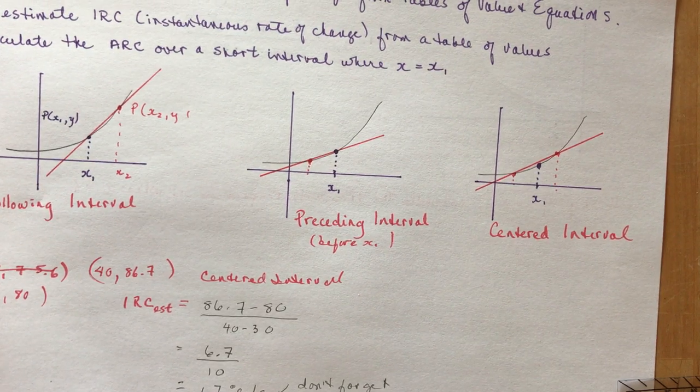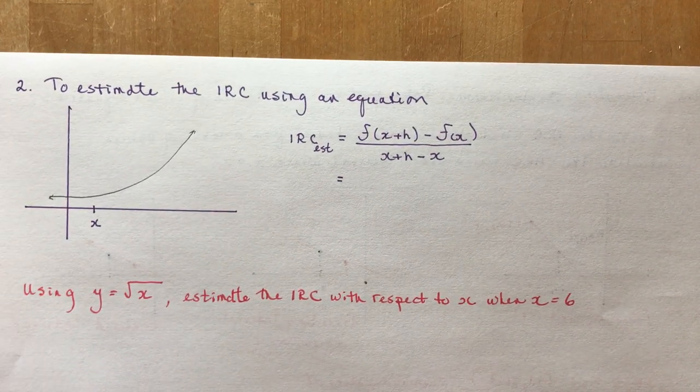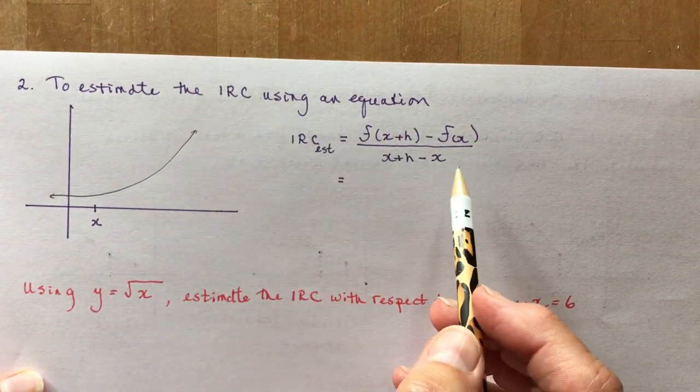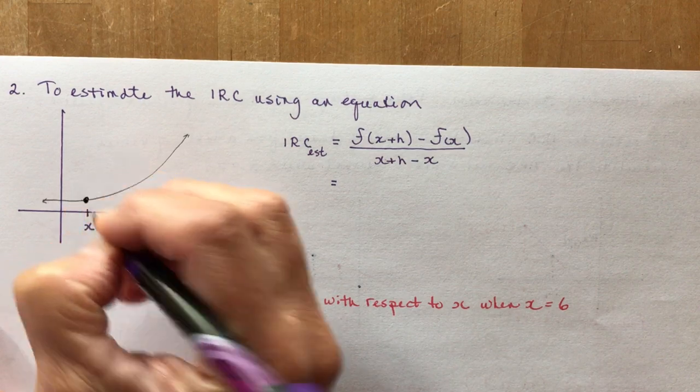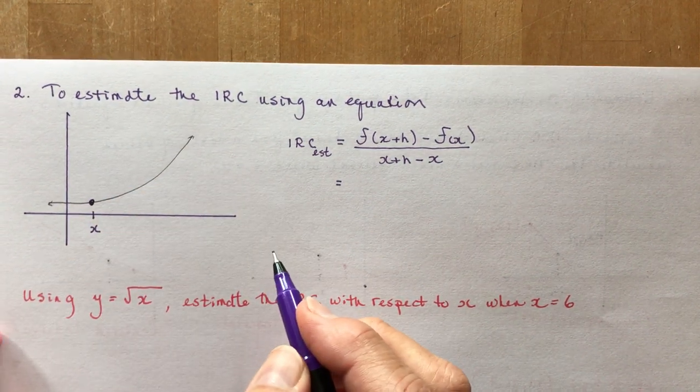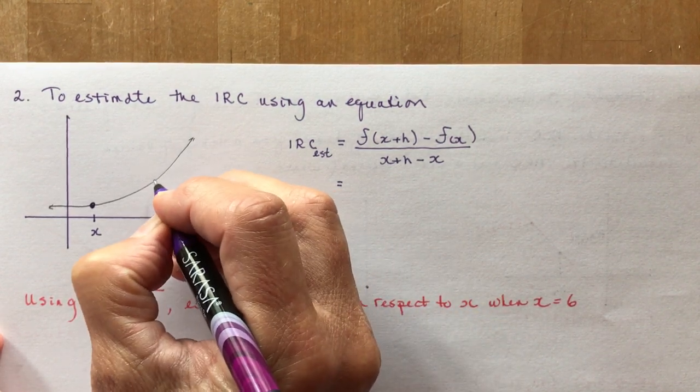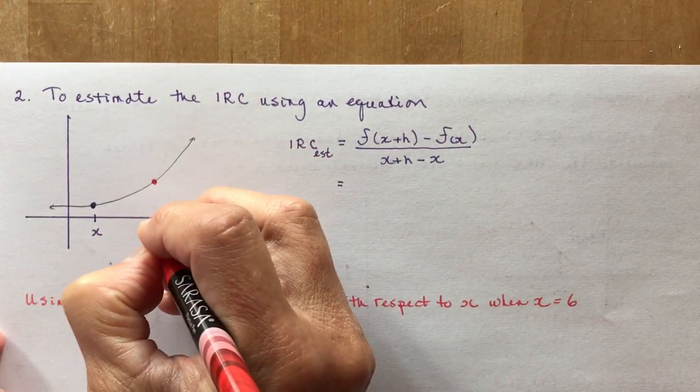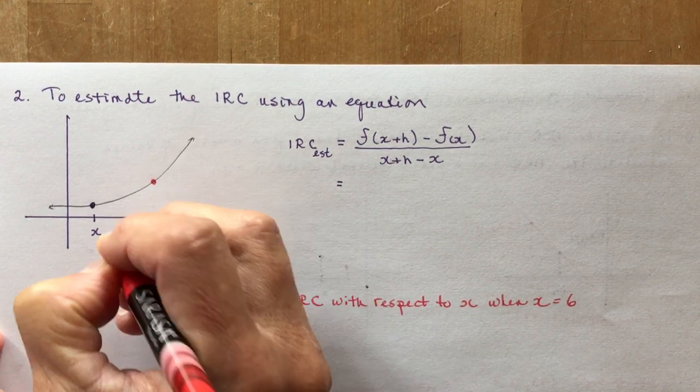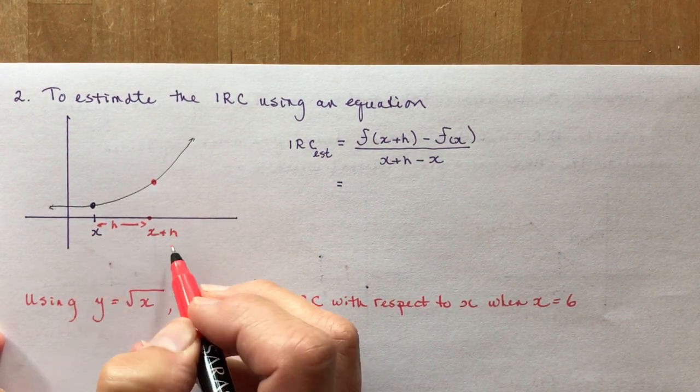Now let's talk about what you would do if you had an equation. To estimate the instantaneous rate of change using an equation. Here's x and I want to use a point after it. Don't say you should use centered because we're using an equation. We're going to use a point after it. So let's say I pick this point here. This coordinate here is going to be x plus h, where h is this distance between x and x plus h. If I said this was 2 and I'm going to add 3, my x would be 3.